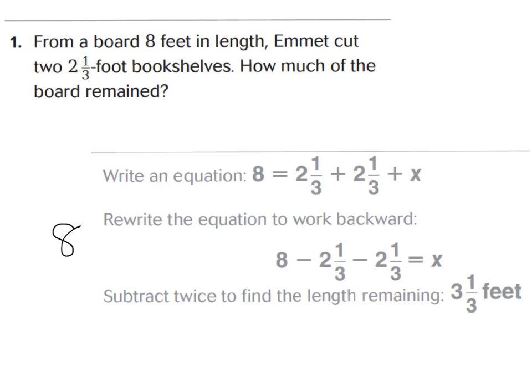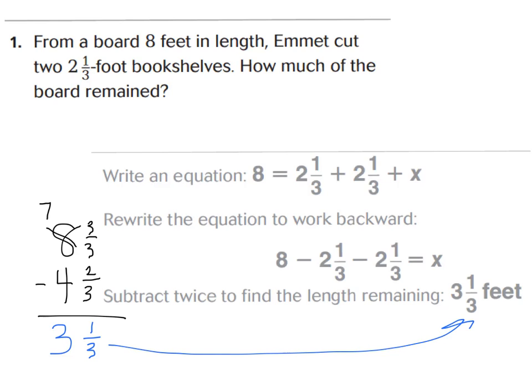So you'd have eight wholes minus four and two-thirds. With subtraction, you can borrow a whole and make a whole, giving you seven wholes and three-thirds. Now you can subtract: three-thirds minus two-thirds is one-third, and seven wholes minus four wholes is three wholes. So we have three and one-third feet. I find that strategy easier.